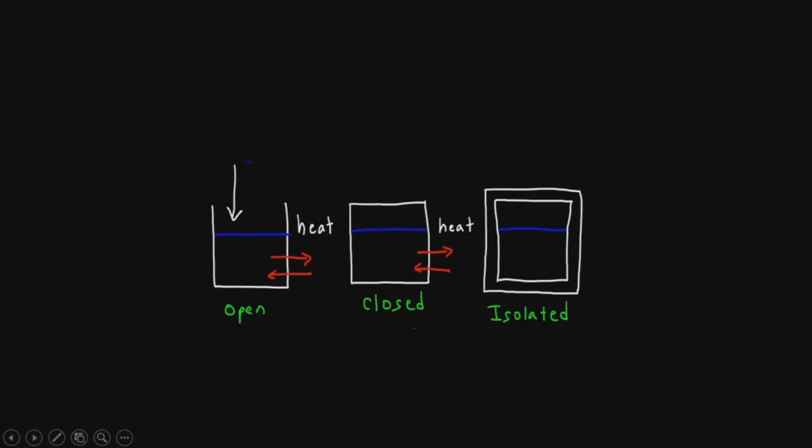A pressure cooker can be taken as an example of a closed system. A rubber balloon filled with air and tightly closed can also be taken as a closed system. The gas confined between a piston and cylinder is also taken as a closed system. Now, what are the thermodynamic variables?